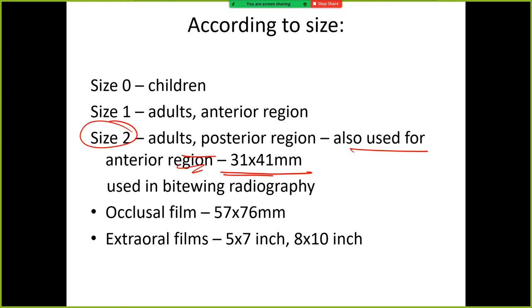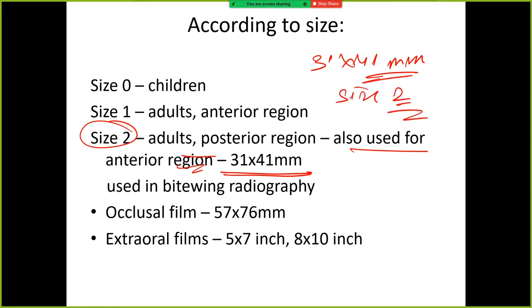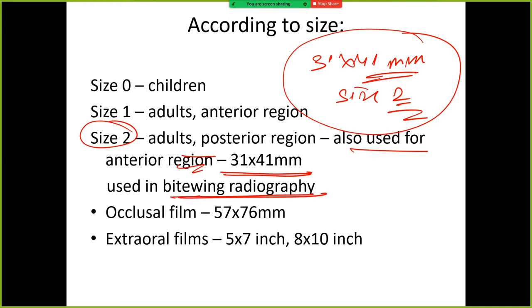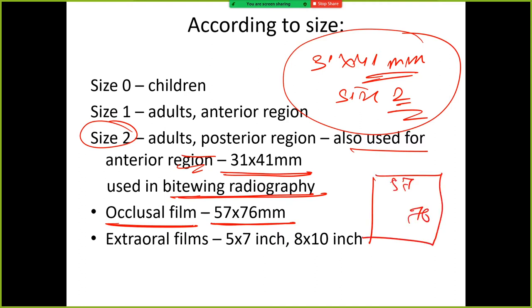Size 2 measures 31 by 41 mm. That is the size of the size 2 radiograph. This same size is used for bite wing radiography. Then occlusal film — what is the occlusal film size? It is 57 by 76 mm. So occlusal film is 57 by 76 mm.